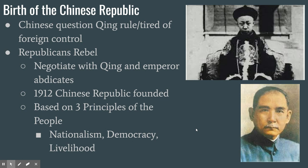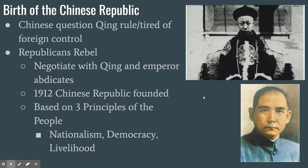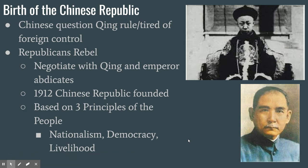The Chinese began to question Qing rule — if the Qing couldn't defend them, who should? The Qing emperor at this point was literally a six-year-old child, and the people were tired of foreign control. A group called the Republicans rebelled, wanting to overthrow the Qing dynasty and form a democracy — a Chinese republic. The emperor eventually abdicated, and in 1912, the Chinese republic was founded based on Sun Yat-sen's Three Principles of the People: nationalism, democracy, and livelihood — meaning China needed national pride, democratic government, and a modern economy. This ended old China, though the new republic would almost immediately come into conflict with Chinese communists.